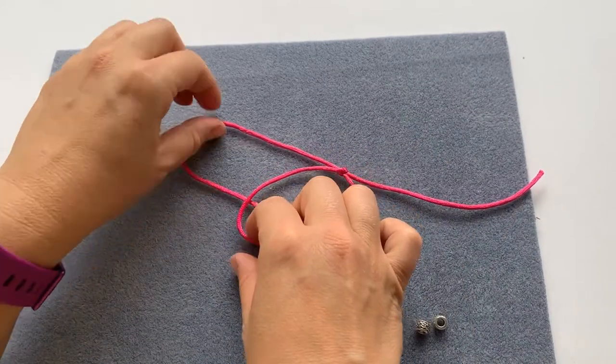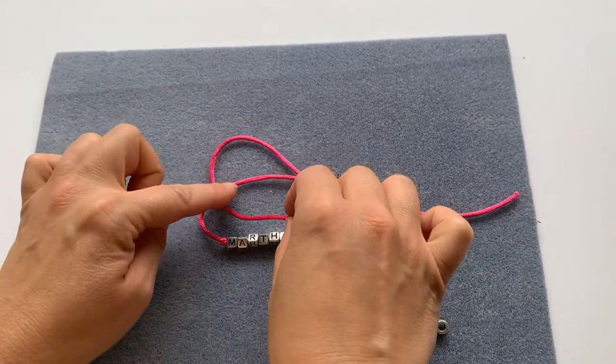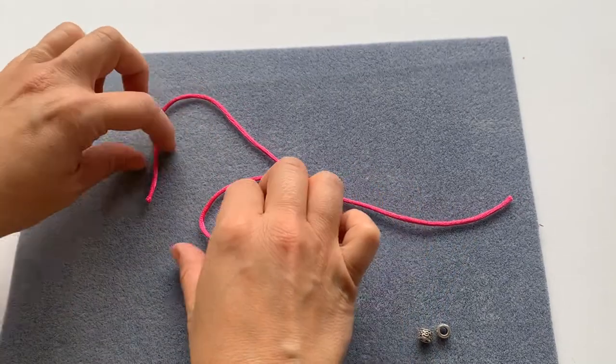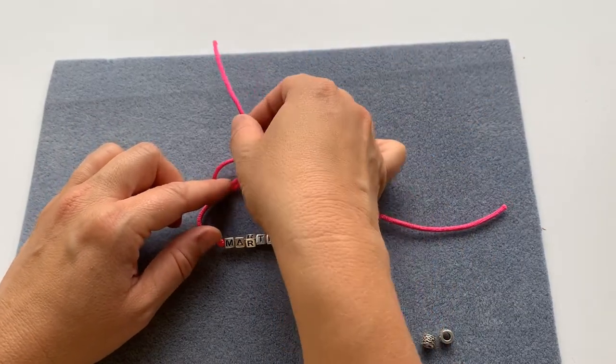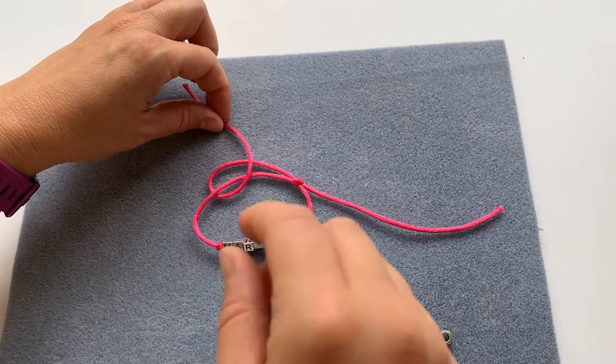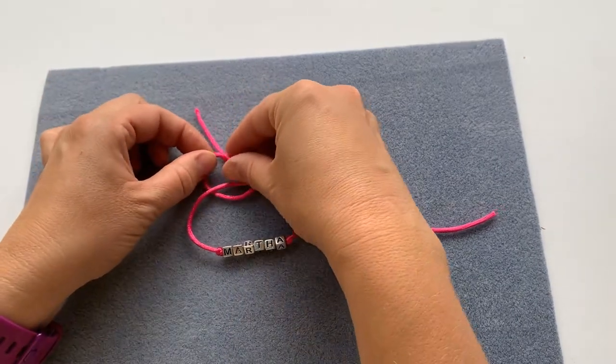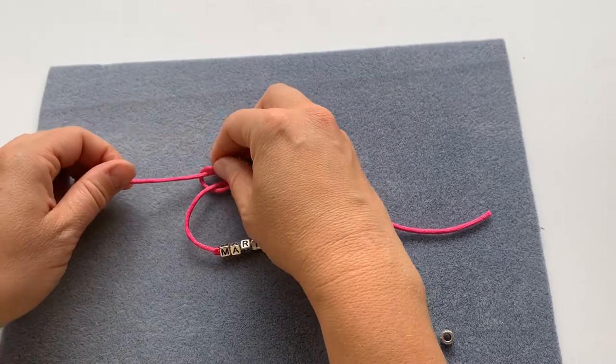Now to do the second knot, I'm bringing this top cord underneath the bracelet cord, back up like that, can you see that, and then just tuck it underneath that top cord.